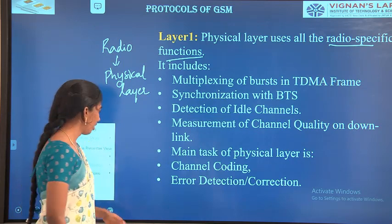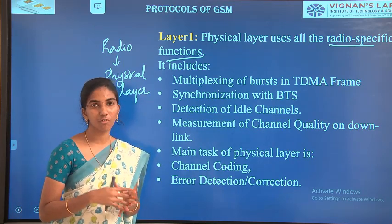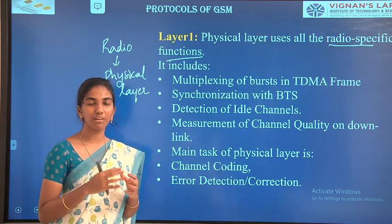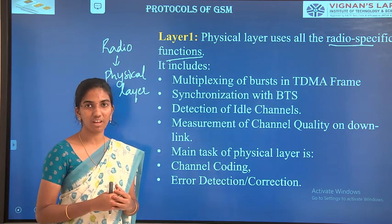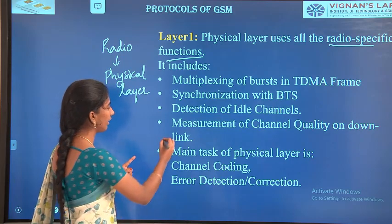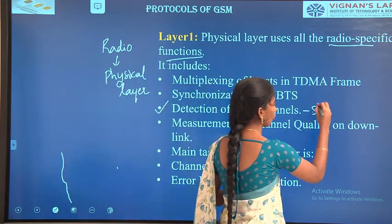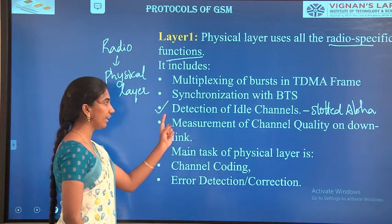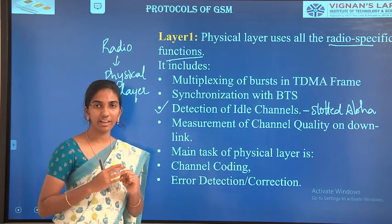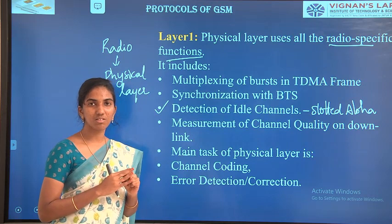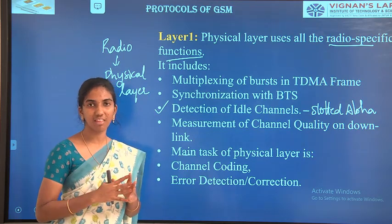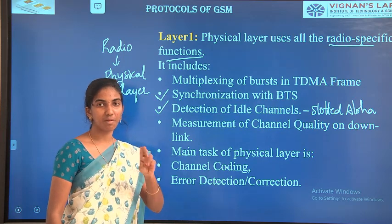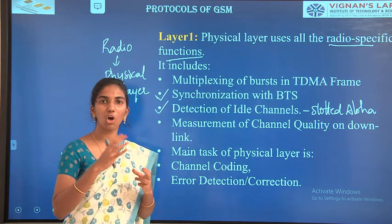What are the radio-specific functions? Whenever we make a call on a mobile, we need a certain frequency channel to be allotted. First, we need to detect idle channels using the concept of slotted ALOHA. Second, whenever an idle channel is found, the channel needs to synchronize with the Base Transceiver Station — so the signal should synchronize with BTS. Third, after synchronization, the call gets connected and we start speaking.